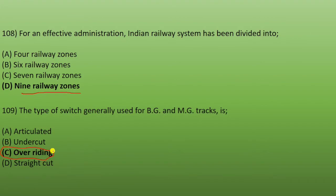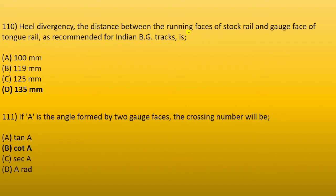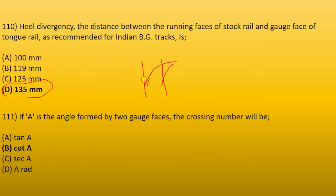Next is Heel Divergency — the distance between the running faces of the stock rail and the gauge face of the tongue rail as recommended for Indian BG track. Next: if 'a' is the angle formed by two gauge faces, the crossing number is cot(a). This is the formula for the crossing number.